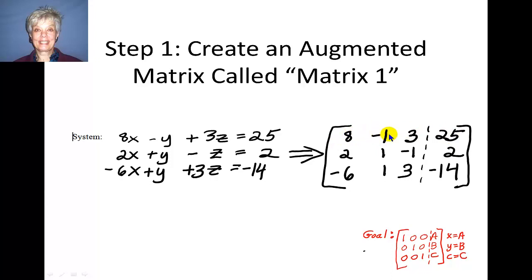When you're using the coefficients of the variables, that's called a matrix, and when you add in the answer column, that's called an augmented matrix. Thus, we have four columns and three rows, so we call this a 3 by 4 matrix.